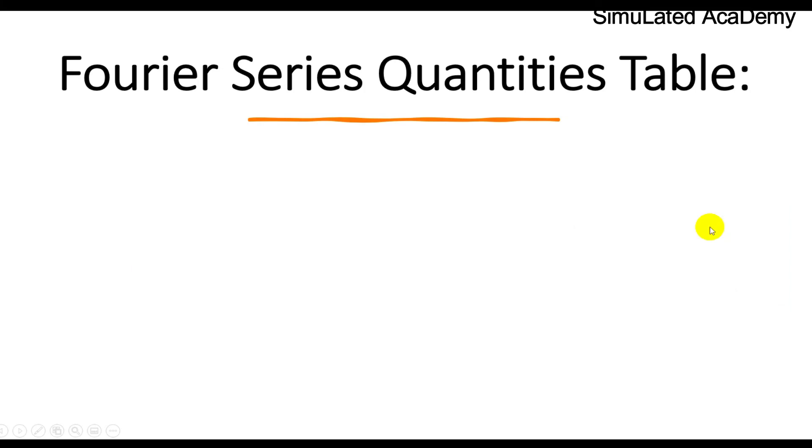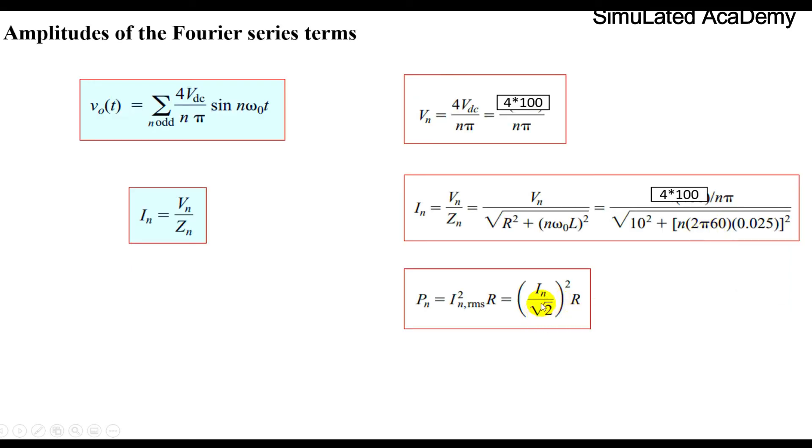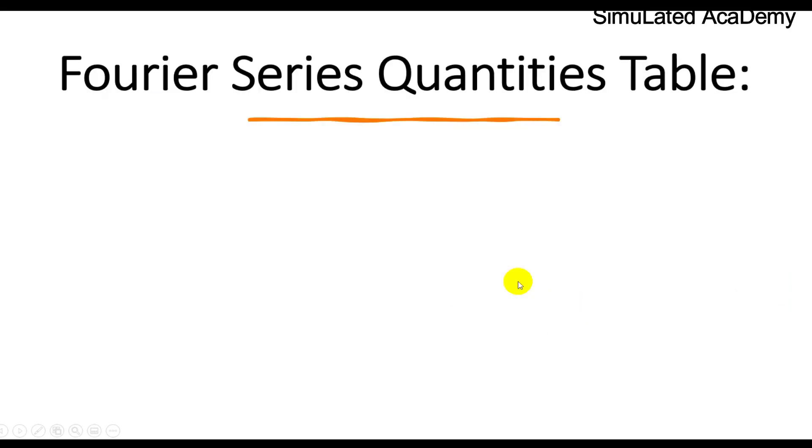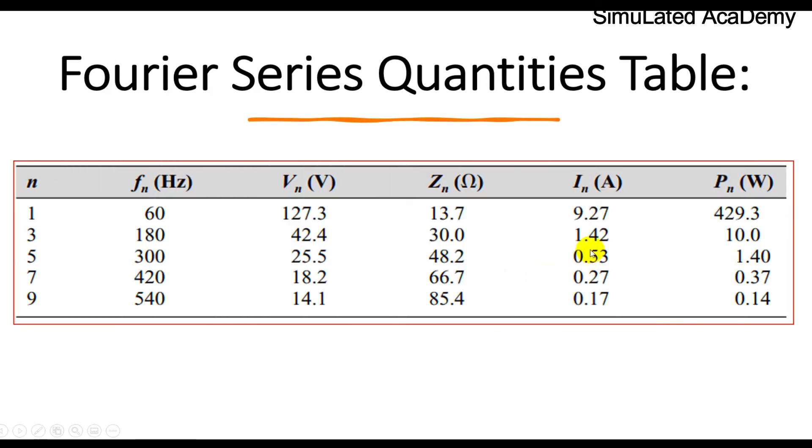And the power is equal to using this formula, take the in square of this and divide it by 2. You will get and multiply it with R. The power for the first harmonic is 429.3 and so on.